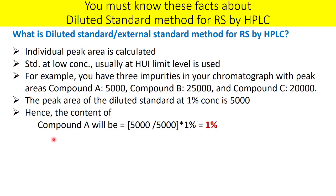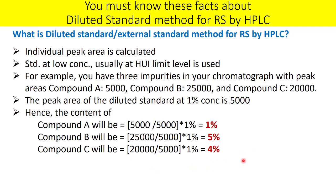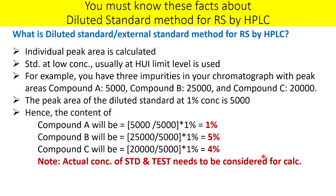The content of compound A is calculated as: response of compound A divided by response of the standard, multiplied by the concentration of the standard (1%). That gives 1%. Similarly, compound B calculates to 5% and compound C to 4%. Note that in actual practice you would also consider the actual weight and potency of the standard during calculation — 1% was used here as a multiplication factor for simplicity.